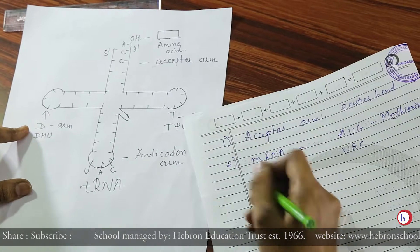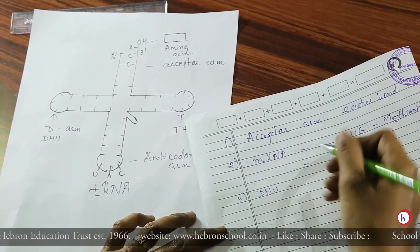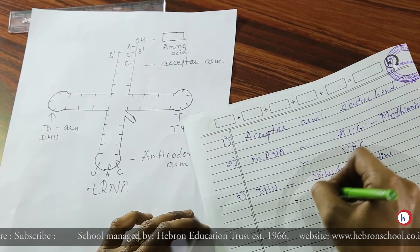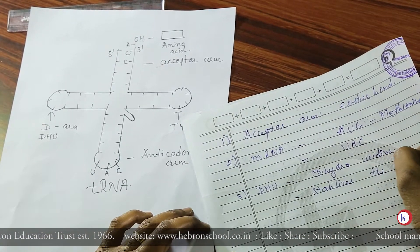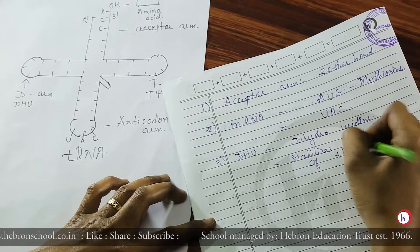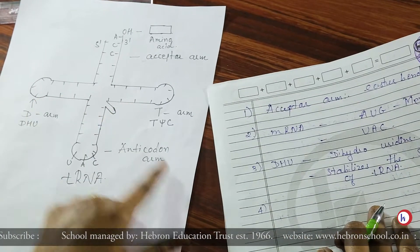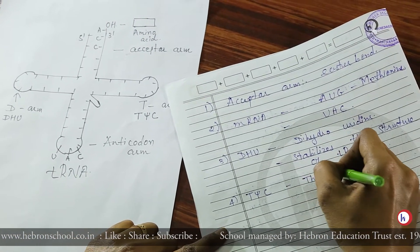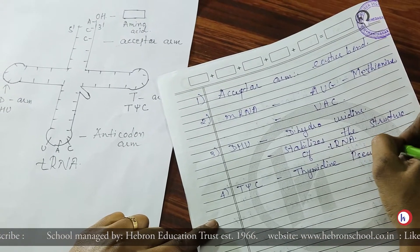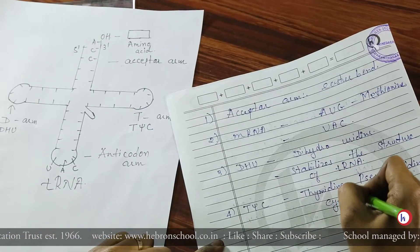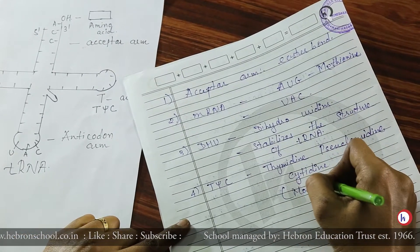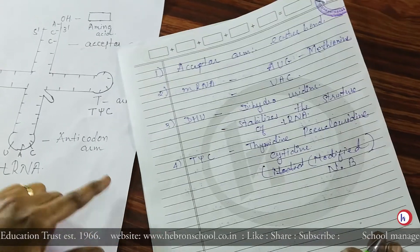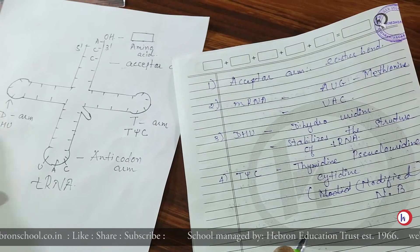The D arm, also called the DHU arm, has the full form dihydrouridine. It stabilizes the structure of tRNA. Opposite to the D arm is the T arm, also called the T-psi-C arm. Its full form is thymidine, pseudouridine, cytidine. These are all modified nitrogen bases present in the structure of tRNA.